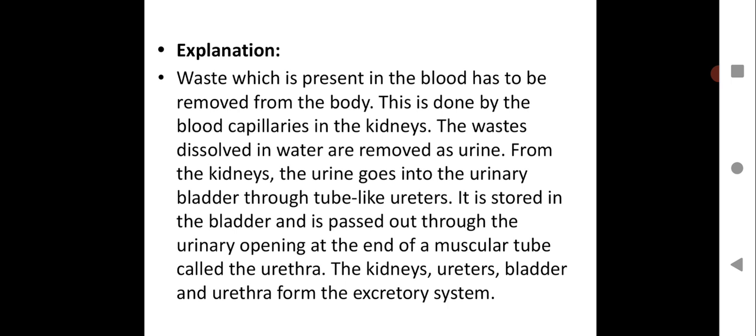Please take down the explanation for this. Waste which is present in the blood has to be removed from the body. This is done by the blood capillaries in the kidneys. The waste dissolved in water are removed as urine. From the kidneys, the urine goes into the urinary bladder through tube-like structures called ureters. It is stored in the bladder and is passed out through the urinary opening at the end of muscular tube called the urethra. The kidneys, ureters, bladder and urethra form the excretory system.